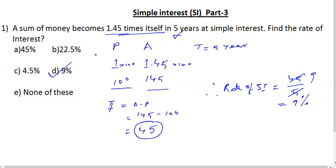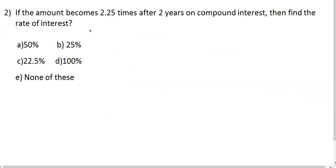Simple interest questions are very simple. The same type of questions exist for compound interest. The procedure is a little bit different. This is compound interest: if the amount becomes 2.25 times after two years on compound interest, then find the rate of interest.